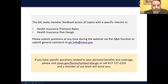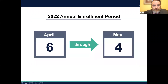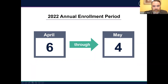Before we jump into the GIC overview, I want to note the dates of this year's annual enrollment, as these are really the context of much of what we will discuss this evening. This year's annual enrollment will open on April 6th and close on May 4th.